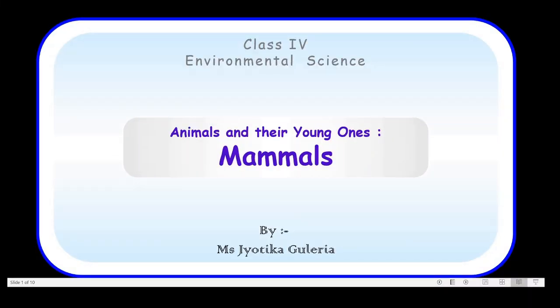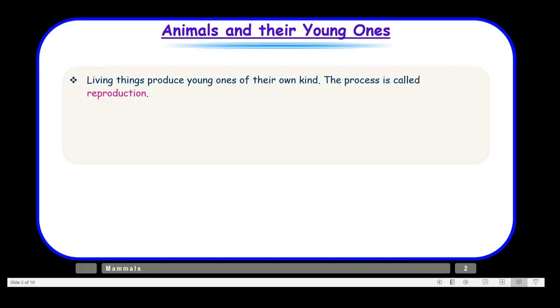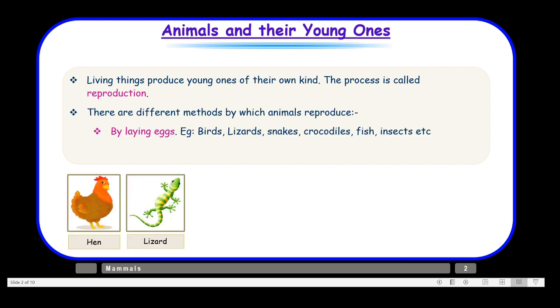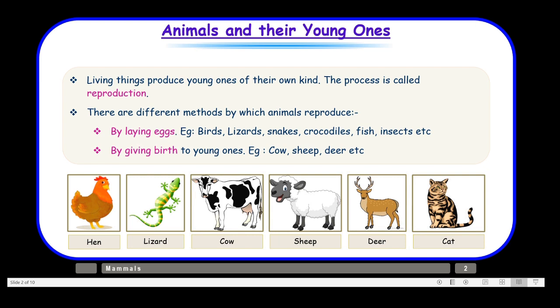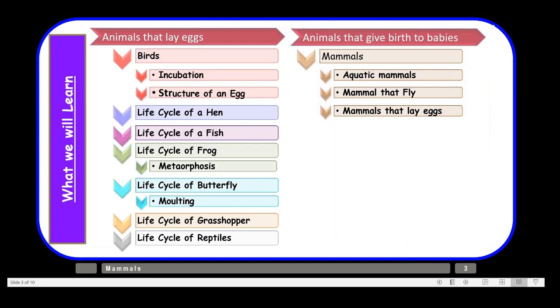Let us quickly recall the term reproduction. We know that living things produce young ones of their own kind, and this process is called reproduction. There are two ways of reproduction. First is by laying eggs — animals like birds, lizards, snakes, crocodiles, fish, insects etc. lay eggs. Then we have animals that give birth to young ones — like cow, sheep, deer, cat etc. So we know the two categories of animals.